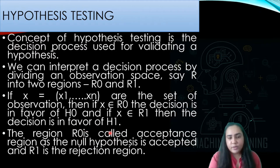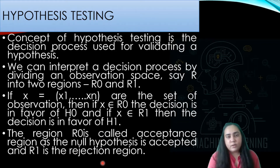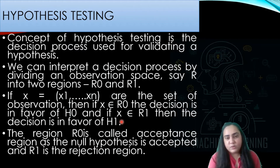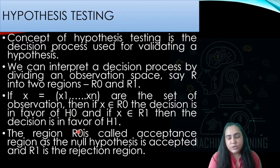Region R0 is known as the acceptance region because the null hypothesis is accepted there. R1 is known as the rejection region. In hypothesis testing, we start our experiment by assuming the null hypothesis is correct, so it is accepted by default. If you prove that your alternate hypothesis is correct, the null hypothesis is rejected — that is why R1, corresponding to the alternative hypothesis, is called the rejection region.